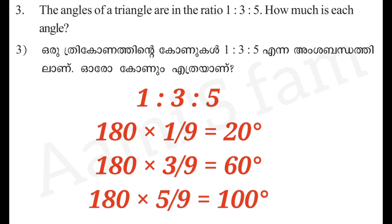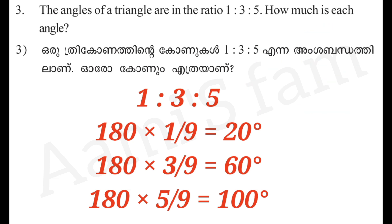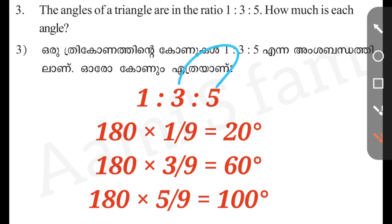The angles of a triangle are in the ratio 1 to 3 to 5. The total angle of a triangle is 180 degrees. So 5 plus 3 is 8, and 8 plus 1 is 9. The sum of parts is 9.